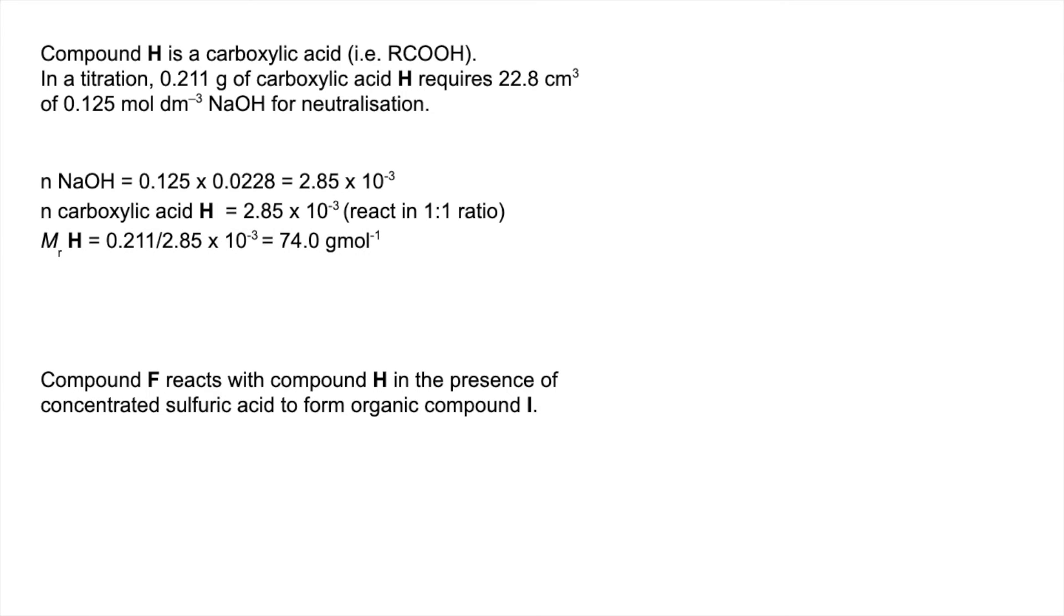So we can work out the Mr of H by mass over moles, so we know that it's 74 grams per mole. So if we subtract the 45 for the COOH, that leaves 29, which is C2H5, so H must be C2H5COOH, in other words, propanoic acid.